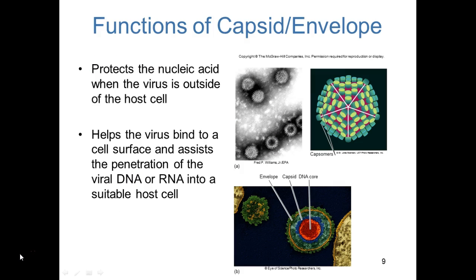The capsid and envelope have important functions. First, they protect the nucleic acid when the virus is outside the host cell — viruses are considered inert when outside the host cell. The capsid or envelope helps the virus bind to the cell surface and assists with penetration of viral DNA or RNA into a suitable host cell. Suitability is important because viruses are very specific about which host cells they can attach to. For example, influenza has no receptors for skin but has receptors that attach to mucous membranes.